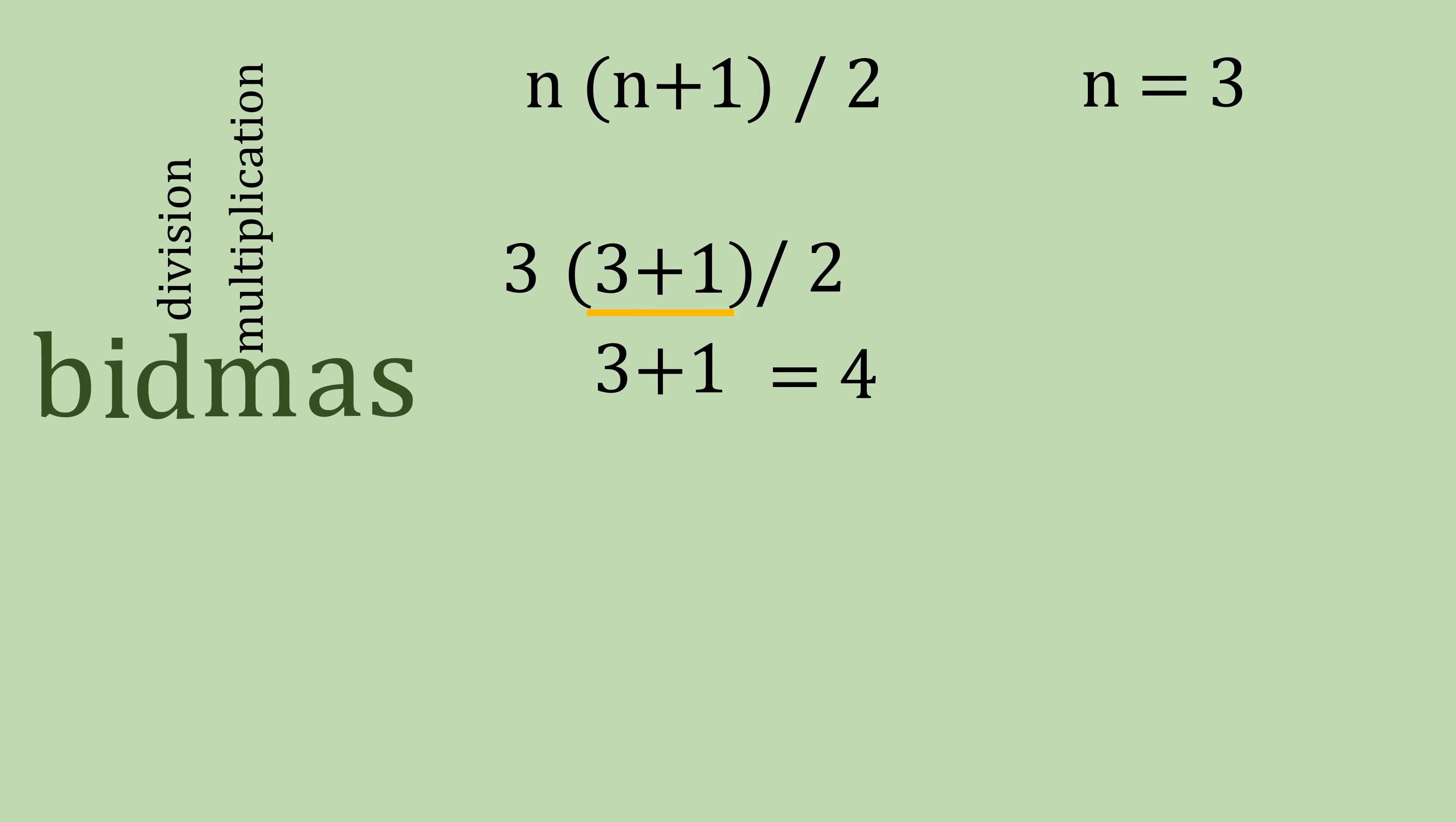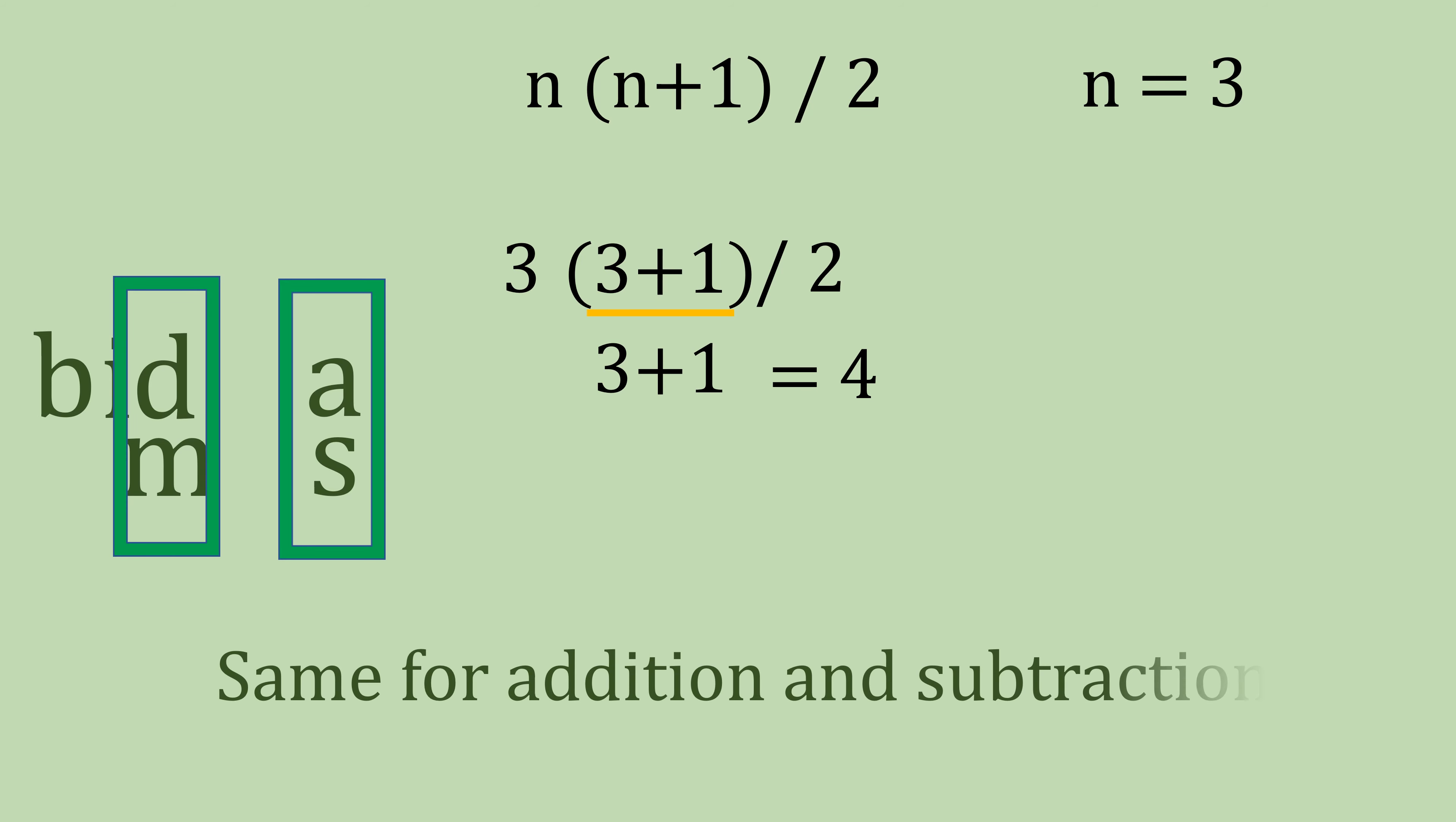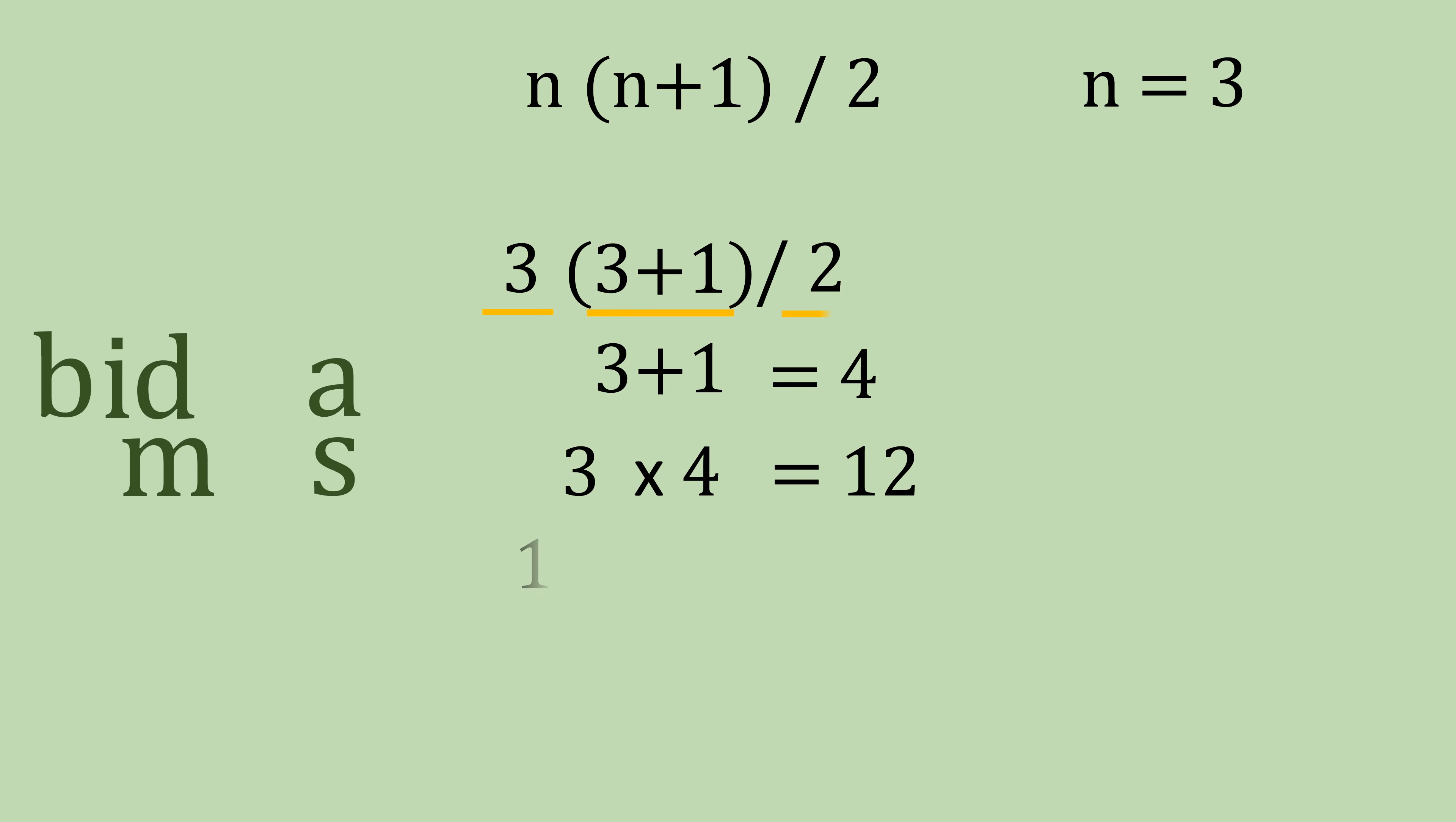which is also the same for these two operations. So that means you just go back to the beginning and carry on working from the left. So the next thing we need to do is multiply the four by n. So that's three multiplied by four, which is 12. And then the last is 12 divided by two, which gives us six. So six is the answer.